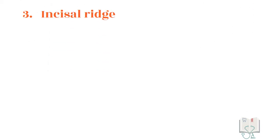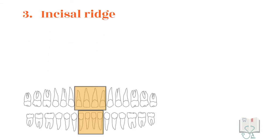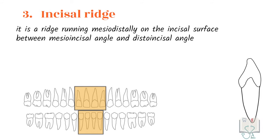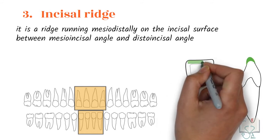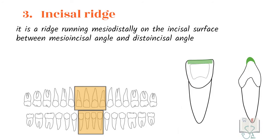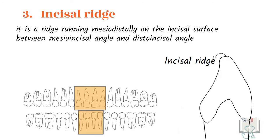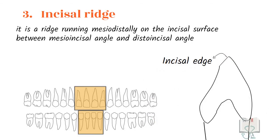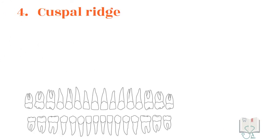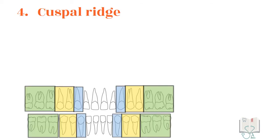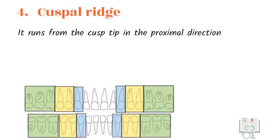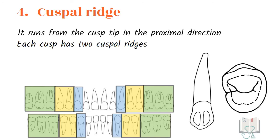The incisal ridge is present in all incisors, running mesiodistally on the incisal surface between the mesoincisal angle and distoincisal angle. With continuous use, the ridge loses its convexity and becomes sharp, and is then called the incisal edge. The cuspal ridge is seen in all teeth with cusps — all molars, premolars, and canines — running from the cusp tip in the proximal direction. Each cusp has two cuspal ridges: one mesial cuspal ridge and one distal cuspal ridge.